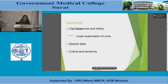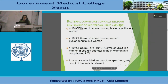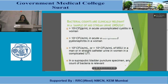Diagnosis is based on clinical features, history, microscopic examination of urine, dipstick test, and culture and sensitivity. Bacterial counts clinically relevant in midstream urine: more than 10³ colony forming units per mL in acute uncomplicated cystitis in a woman; more than 10⁵ or 10⁴ colony forming units per mL in a man or straight catheter urine in a woman in complicated UTI. In suprapubic bladder puncture, any bacterial count is considered significant.